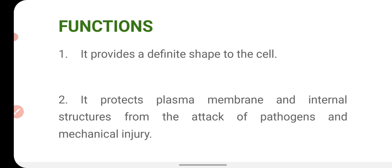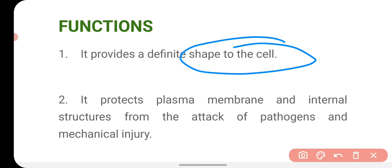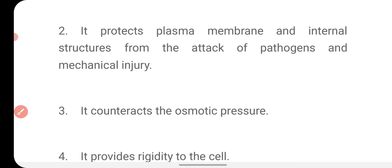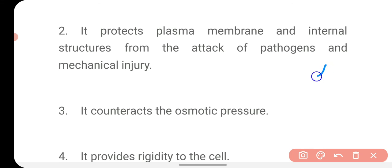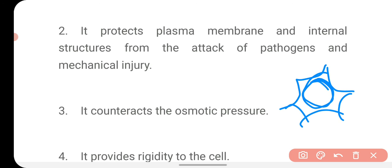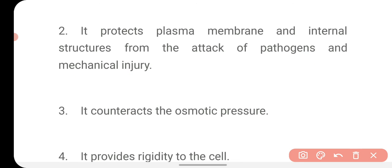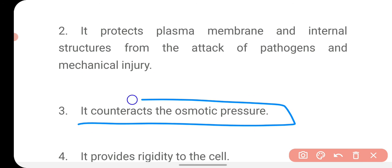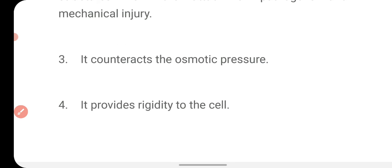Now we will talk about the functions of the cell wall. It provides a definite shape to the cell because it is the outermost boundary in plant cells. It protects the plasma membrane and internal structures from the attack of pathogens and mechanical injury, and it provides rigidity to the cell because the cell wall is hard. It also counteracts osmotic pressure.